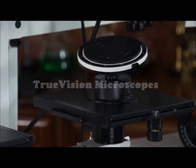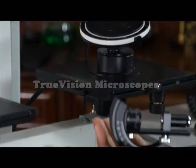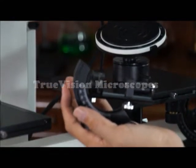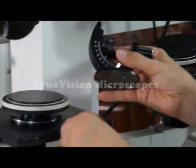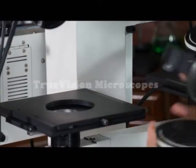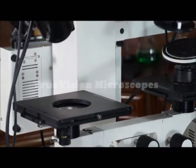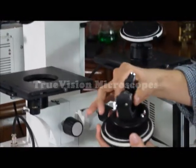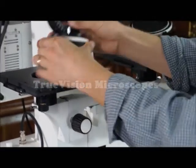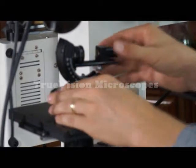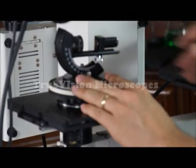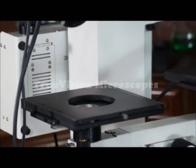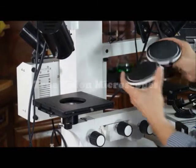For doing bullet comparison, you have the bullet holders. These bullet holders, this is the bullet holder, it's screwed to the stage, there's two screw holes. So depending on your specimen, you have the choices of the stage.